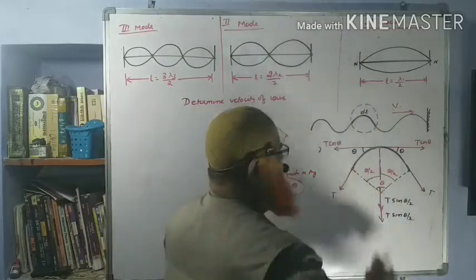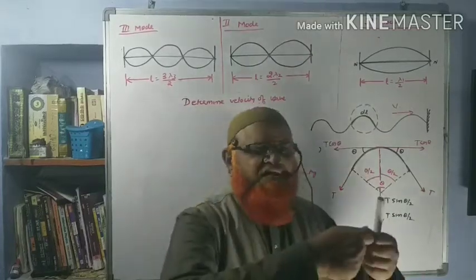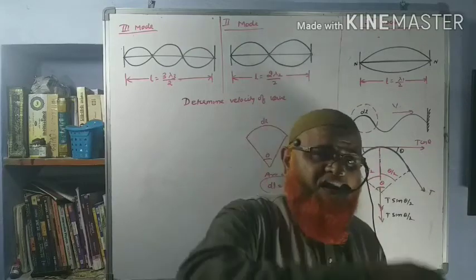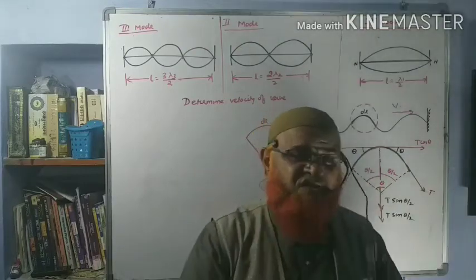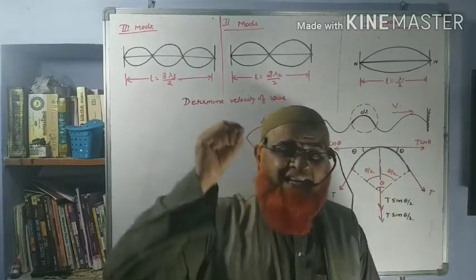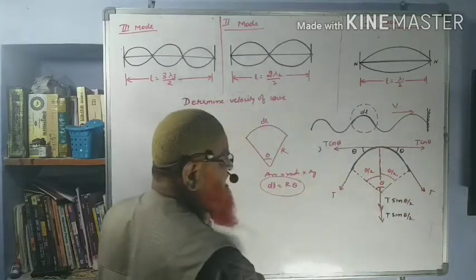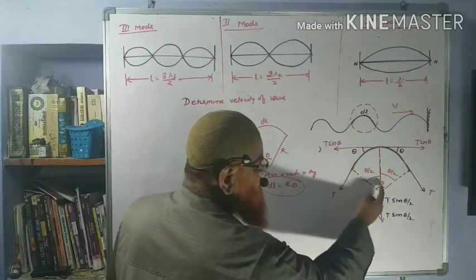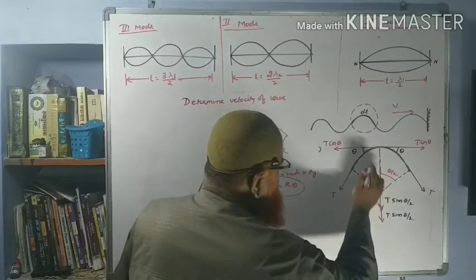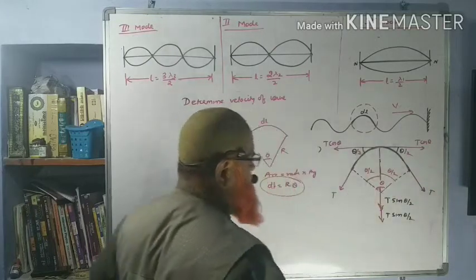When I have taken this string separately, there is a tension created in the string. Tension is the stiffness created as a wave travels through the rope. Tension always acts tangentially. So the angles on each side are theta by 2 and theta by 2.